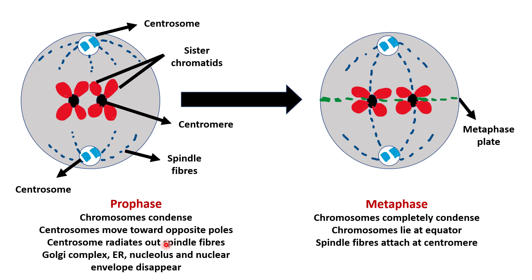First is Prophase. Here chromosomes start to condense and centrosomes move towards opposite poles of the cell. Each centrosome radiates out spindle fibers. Each chromosome is composed of two sister chromatids, and these two sister chromatids are attached together at the centromere.